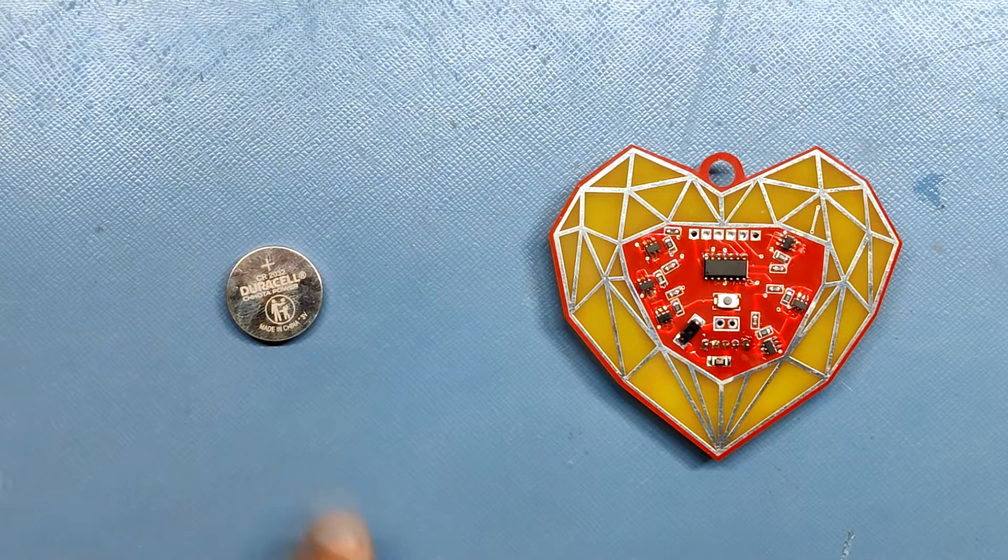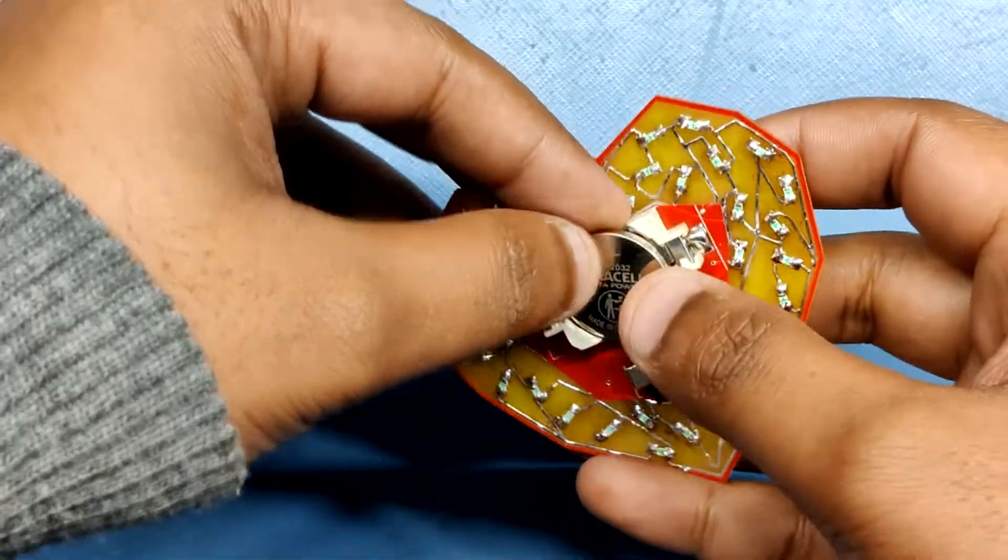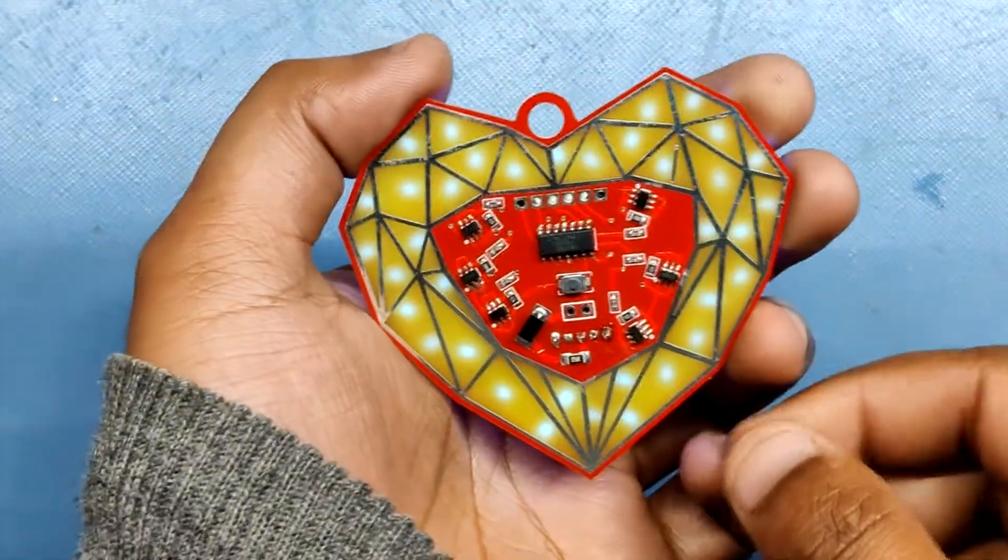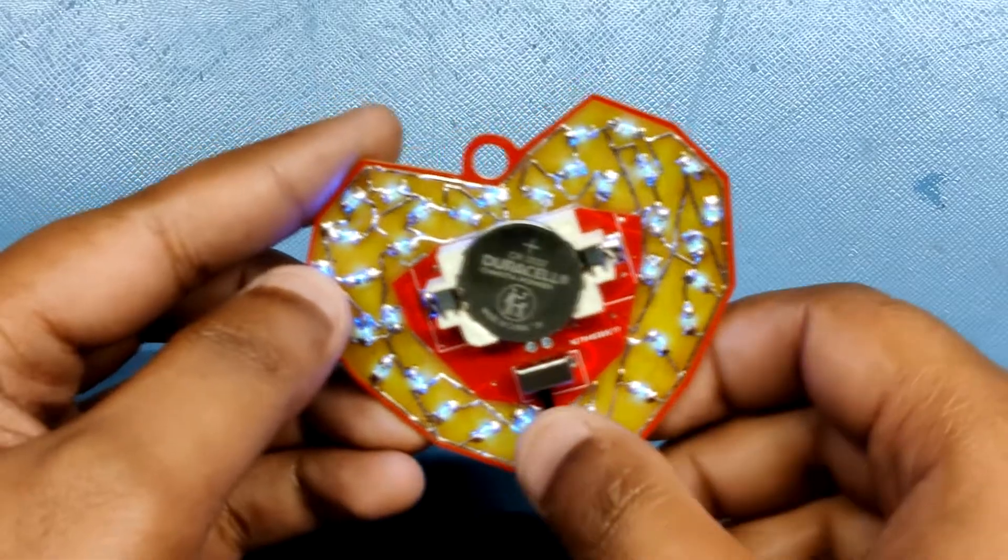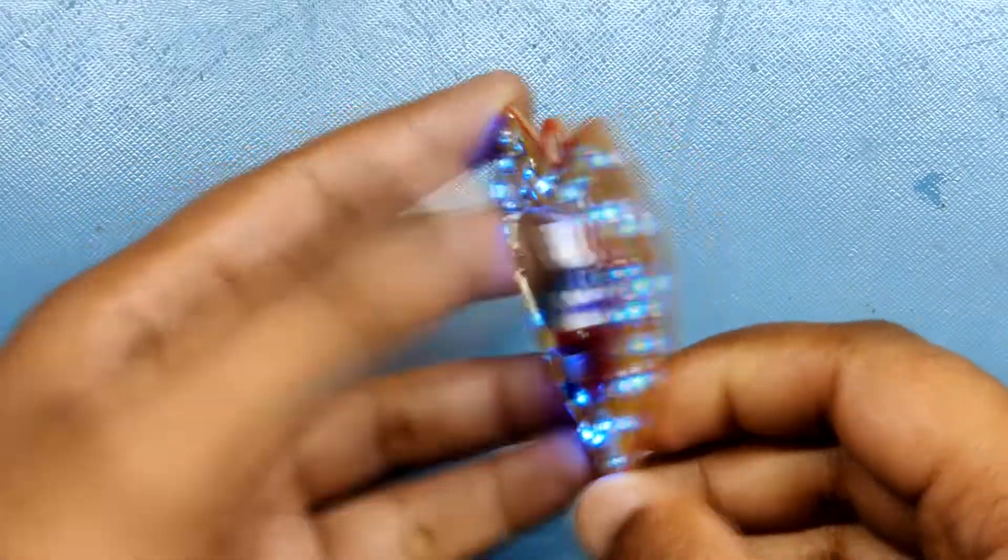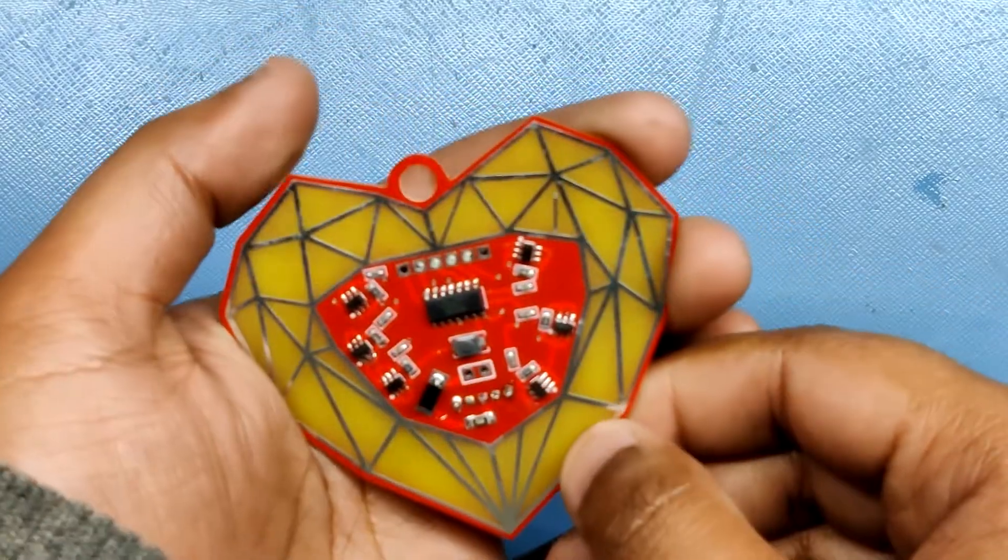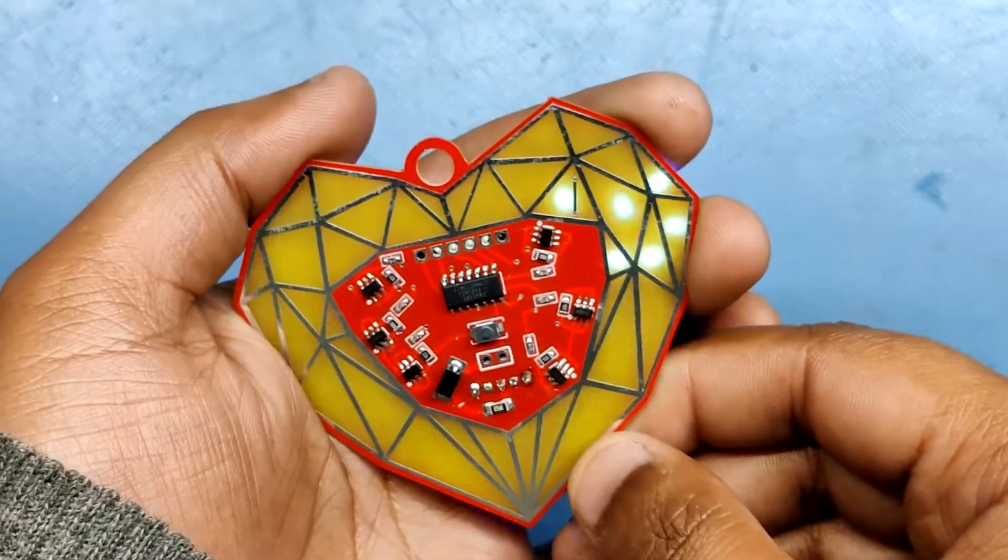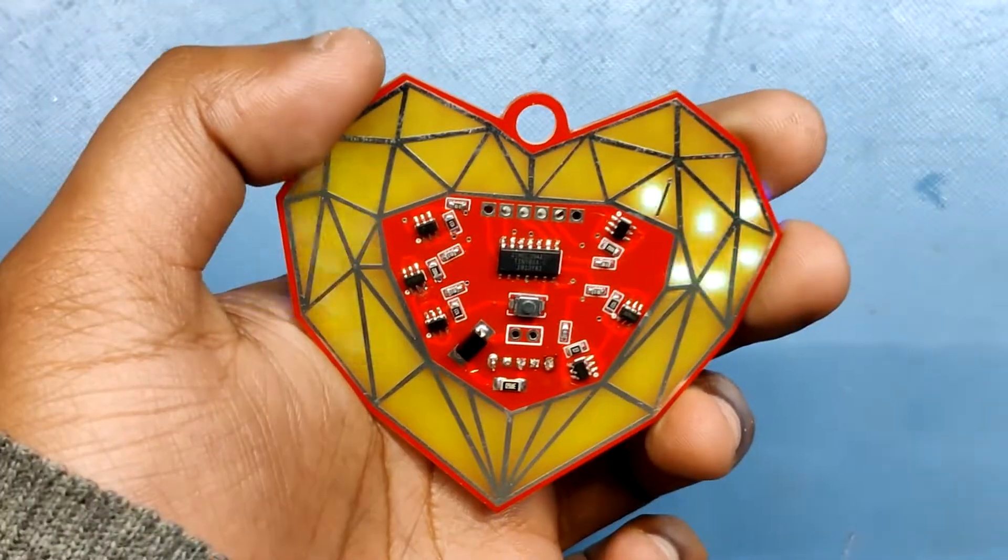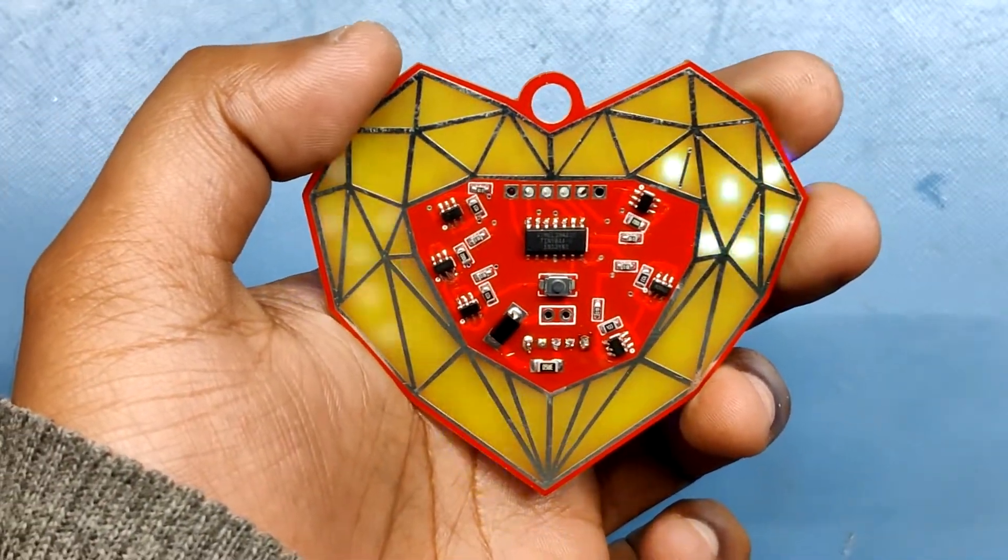Now we can add the coin cell to its place and see if the board is working or not. And it's working! To turn on the system, we use the slide switch, and to change the LED animation, we have to use the button on the top side. By pressing it, the LEDs glow in a chasing sequence or they get turned off entirely.